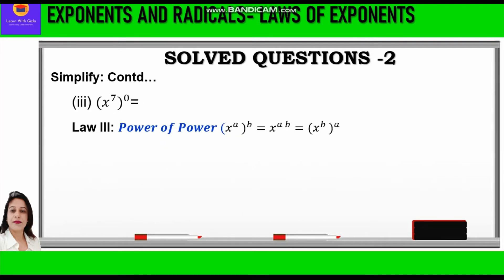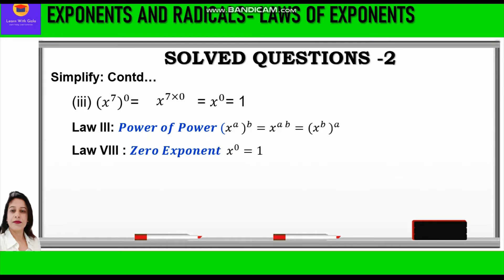Question number 3: x raised to power 7 and whole raised to power 0. Whenever we have power of power — inside and outside — we multiply both the powers. So we have x raised to power 7 into 0, which equals x raised to power 0, which equals 1. Here x raised to power 0 is 1 according to the zero exponent law, that is law 8.